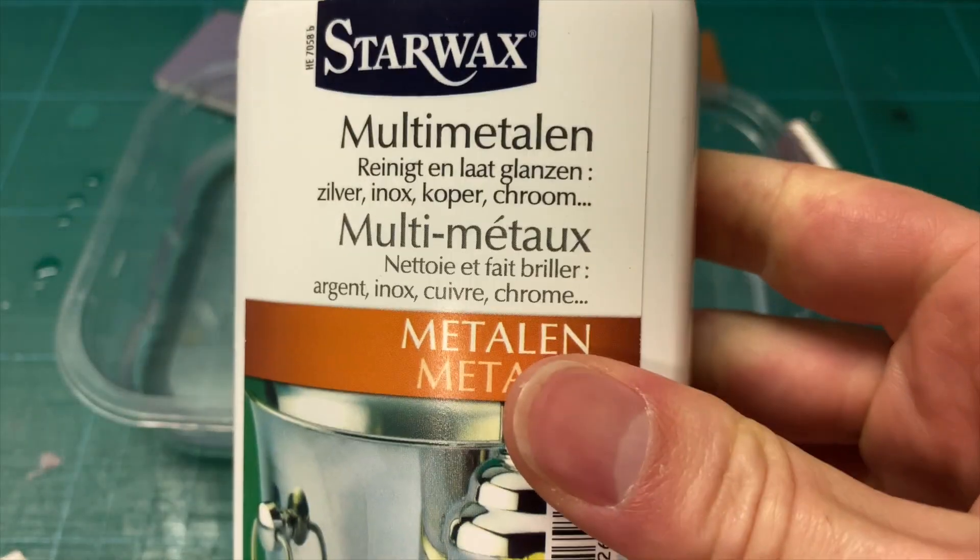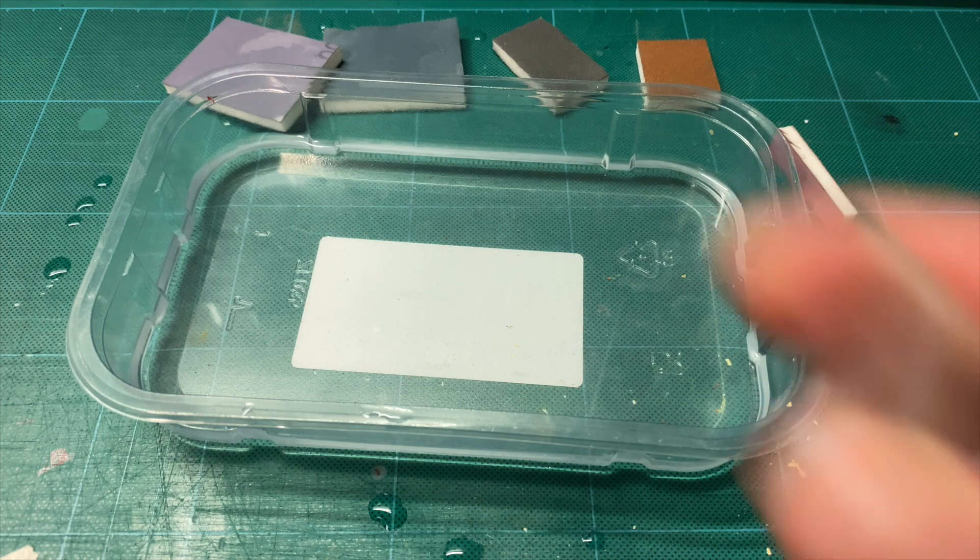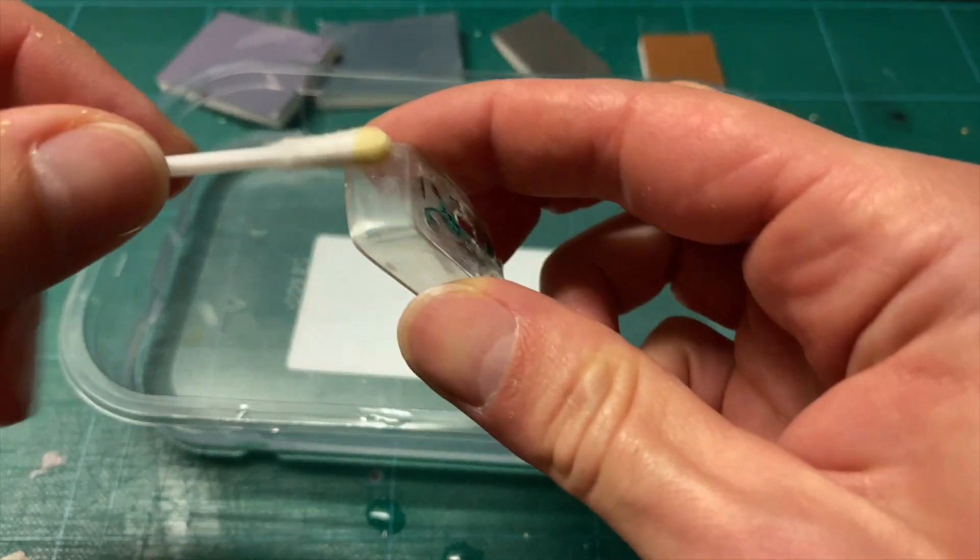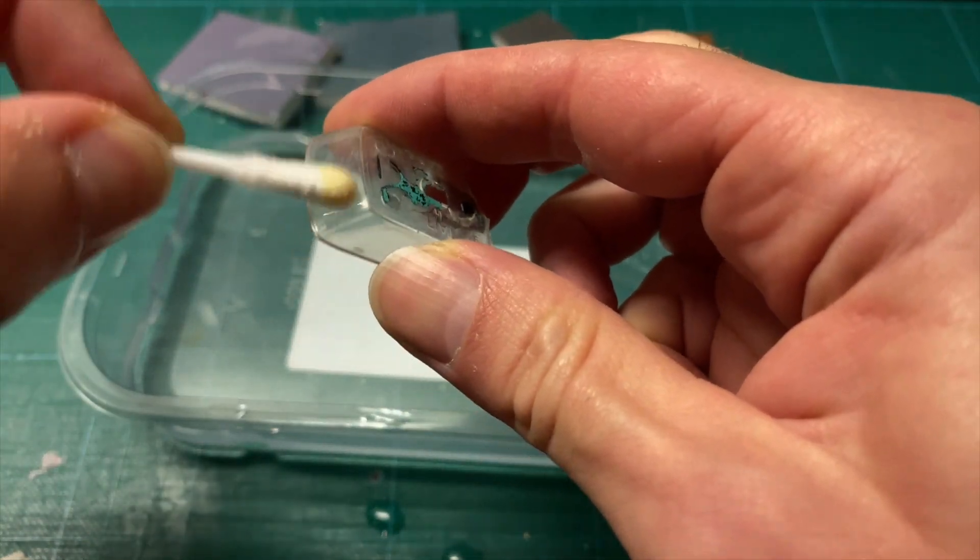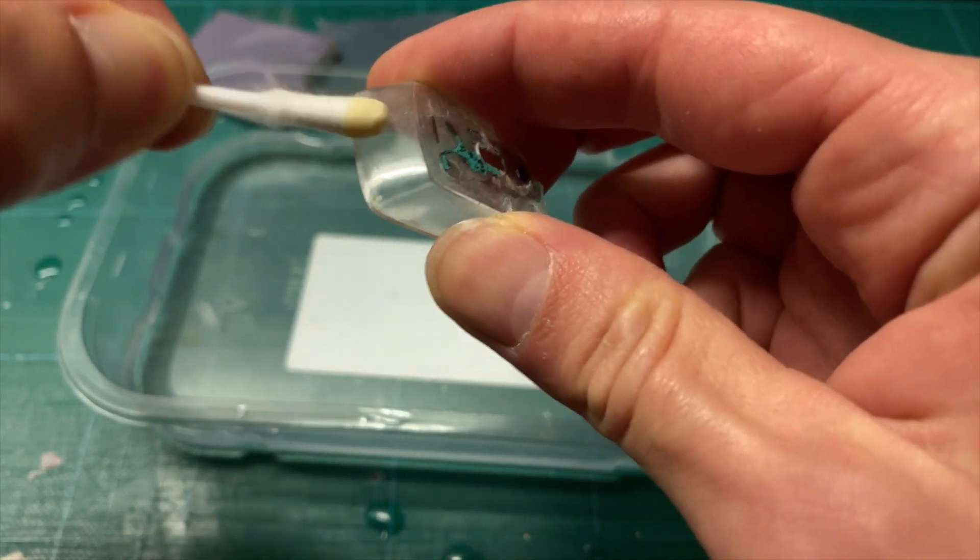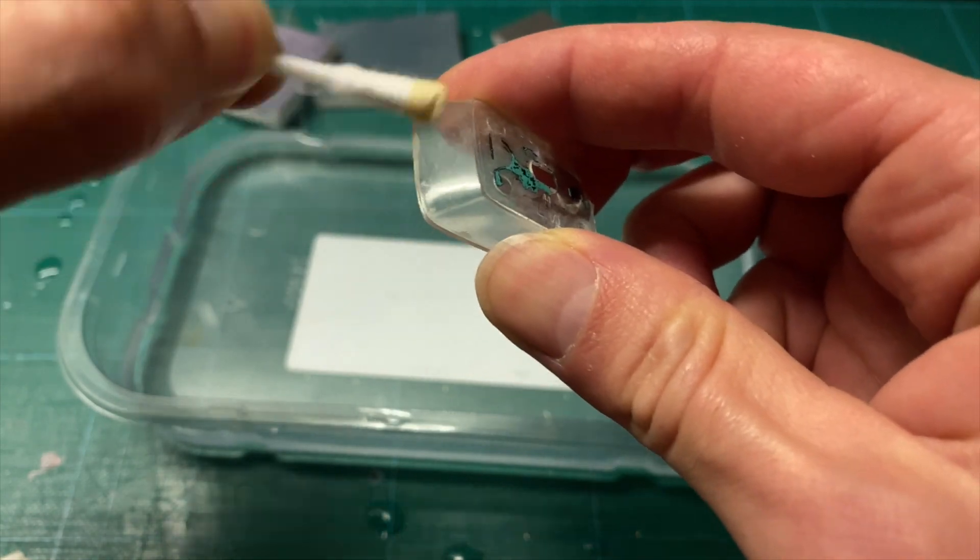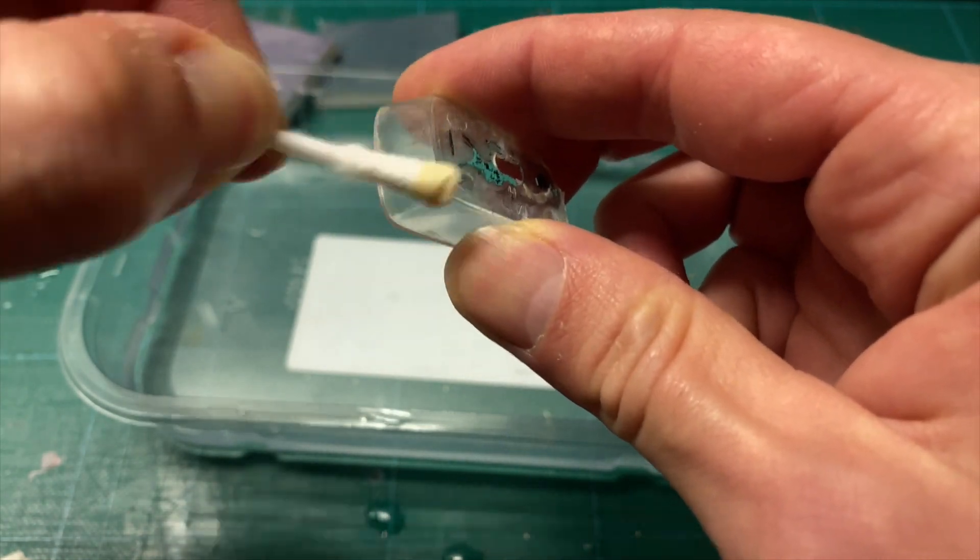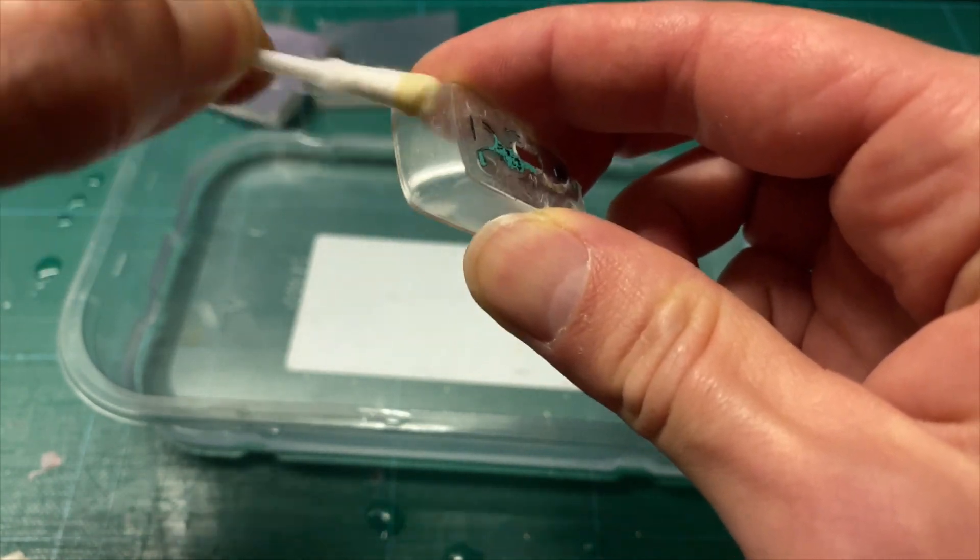For the end result I use some metal cleaner to polish the window unit until it gets its shine back. It's possible you already have a nice and shiny result after the 12,000 grid size micro mesh pad but I have good results with this metal cleaner. I simply apply the cleaner with a cotton bud and clean the window unit with circular motions until it shines like new again.